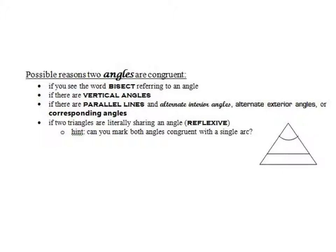If you have vertical angles in your picture, then you also know that those angles will be congruent. If you have parallel lines and one of the angle pairs that we know are congruent with parallel lines — like alternate interior angles, alternate exterior angles, or corresponding angles — then those angles will be congruent. And if two triangles are literally sharing an angle, we can use the reflexive property again with the angle.